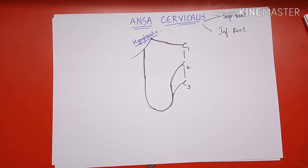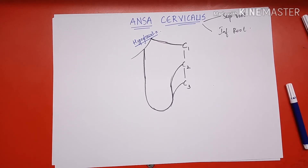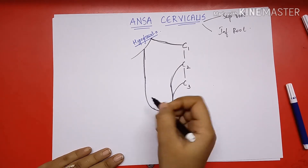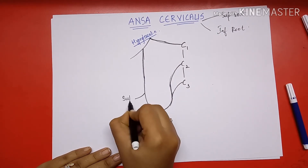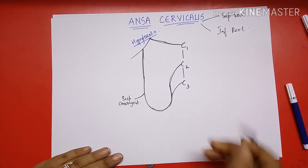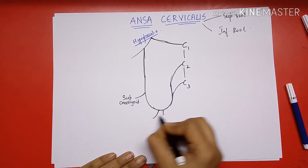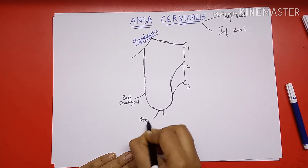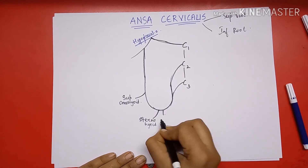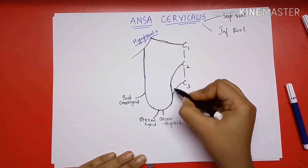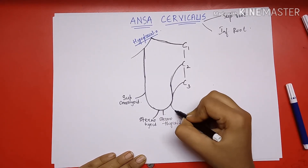We have mainly four branches of ansa cervicalis. The superior root supplies to the superior belly of the omohyoid. The ansa cervicalis itself supplies to the sternohyoid and sternothyroid.